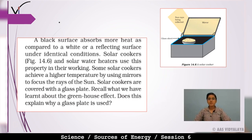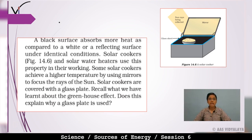The black surface can absorb more heat compared to a white surface. Solar cookers and solar water heaters use this property in their working. Some solar cookers achieve high temperatures by using a mirror to focus the sun's rays. Solar cookers are covered with a glass plate.